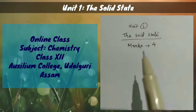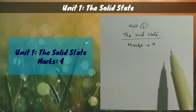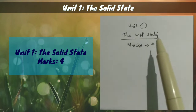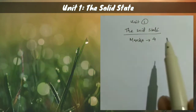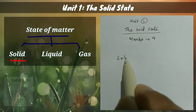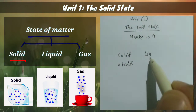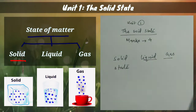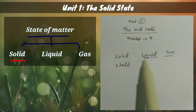The first unit of your chemistry syllabus is the solid state, which carries four marks. We will discuss the nature of the solid state. We know that there are three states: solid state, liquid, and gas. These states are differentiated based on how we divide or distinguish them.